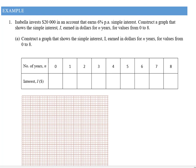So here's my first example. I've got Isabella invests $20,000 in an account that earns 6% per annum interest. Construct a graph that shows the simple interest earned for n years from the values of 0 to 8.